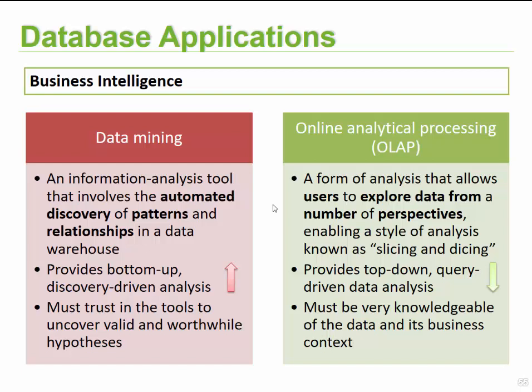The next tool is Online Analytical Processing, or OLAP. This form of analysis allows individuals to explore data by accessing it from a number of perspectives — also known as slicing and dicing. It provides a top-down, query-driven data analysis and requires knowledge about the data and how it's used within the business. For example, with slicing and dicing we could look at sales information in the Western Cape region, find the sales people with the biggest sales percentages, and show the top products they've sold.